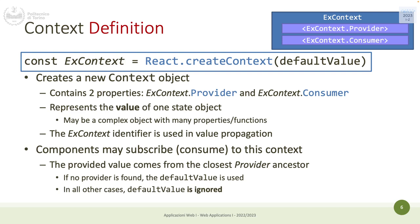The idea of context is that you have very little information that almost every component needs — the language as a string, the color mode as a string or number, logged-in status as true/false, maybe a few user details like name. But these should be very small objects, not huge elements — for everything else there is state and props.